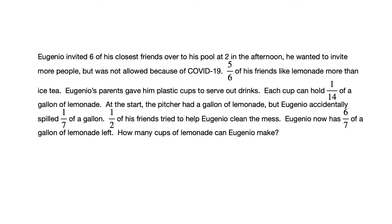So let's take a look at this word problem — it's quite a long one. It says Eugenio invited six of his closest friends over to his pool at two in the afternoon. He wanted to invite more people, but was not allowed because of COVID-19. Five-sixths of his friends like lemonade more than iced tea. Eugenio's parents gave him plastic cups to serve out drinks. Each cup can hold one-fourteenth of a gallon of lemonade. At the start, the pitcher had a gallon of lemonade, but Eugenio accidentally spilled one-seventh of a gallon. Half of his friends tried to help Eugenio clean the mess, and Eugenio now has six-sevenths of a gallon of lemonade left. How many cups of lemonade can Eugenio make?